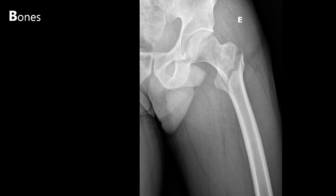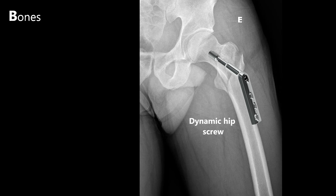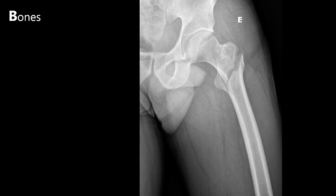This x-ray shows an intertrochanteric fracture, which is extracapsular. This could be fixed with a dynamic hip screw. The lesser trochanter has also been completely displaced.